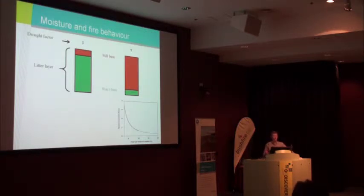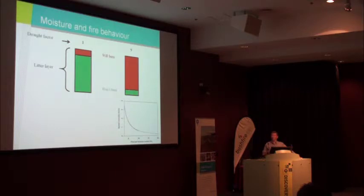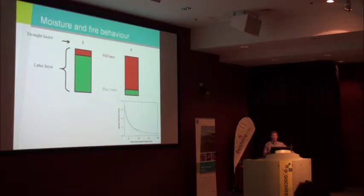MacArthur represented drought factor as ranging from naught, in which case the whole litter profile was too wet to burn, through to ten, in which the whole depth of the litter layer is dry enough to burn. So it's not just about a particular moisture content value, but also how that moisture content value varies through different parts of the fuel.